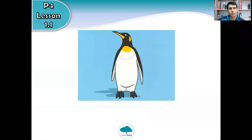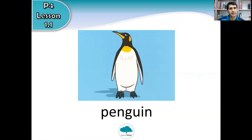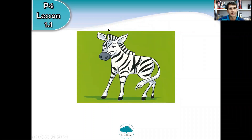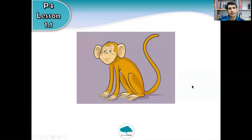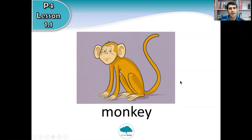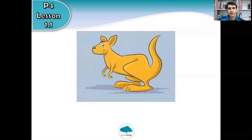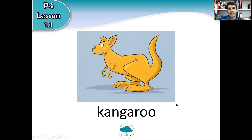So what animal is this? Do you remember? It is a penguin. Okay, and the next one, what is this? What animal? It's a zebra. And the next one, what animal is this? What is it? It's a monkey. Now what animal is this? It lives in Australia and likes to jump. It's a kangaroo.